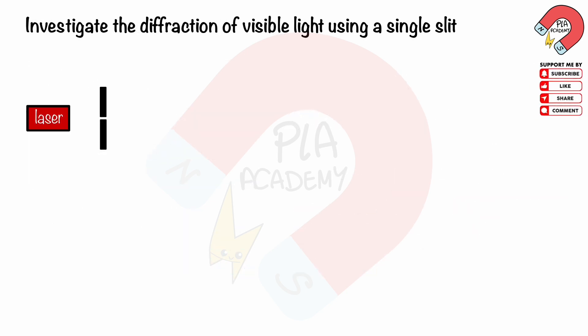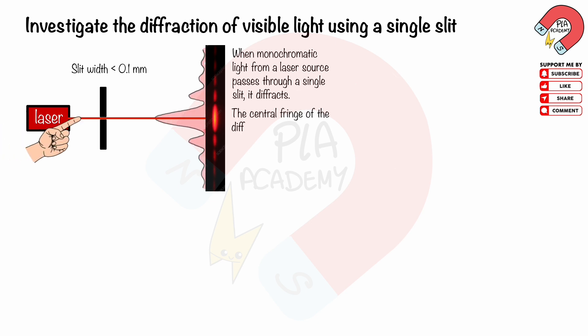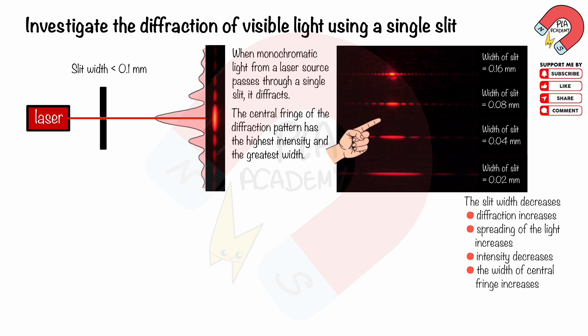To investigate the diffraction of visible light using a single slit, the slit width should be less than approximately 10⁻⁴ meters, or 0.1 millimeters, because the wavelength of visible light ranges from about 10⁻⁶ to 10⁻⁷ meters. When monochromatic light from a laser source passes through a single slit, it diffracts. The central fringe has the highest intensity and greatest width. Decreasing the slit width increases diffraction, leading to greater spreading of the light, a decrease in intensity, and a wider central fringe.